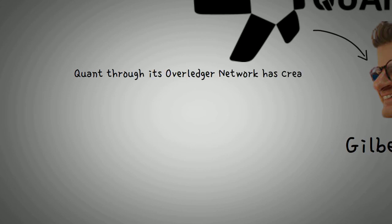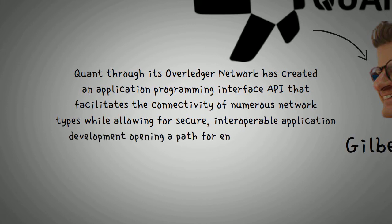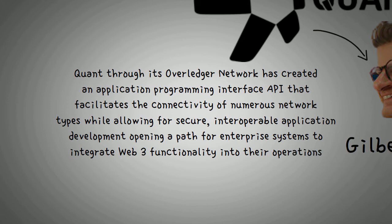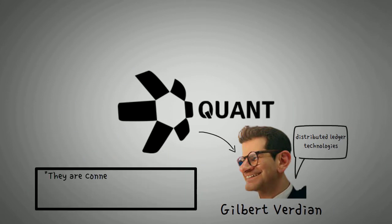Quant, through its Overledger Network, has created an application programming interface (API) that facilitates the connectivity of numerous network types while allowing for secure interoperable application development, opening a path for enterprise systems to integrate Web3 functionality into their operations. To put it in their words, they are connecting all the world's distributed ledgers for faster, more efficient growth.